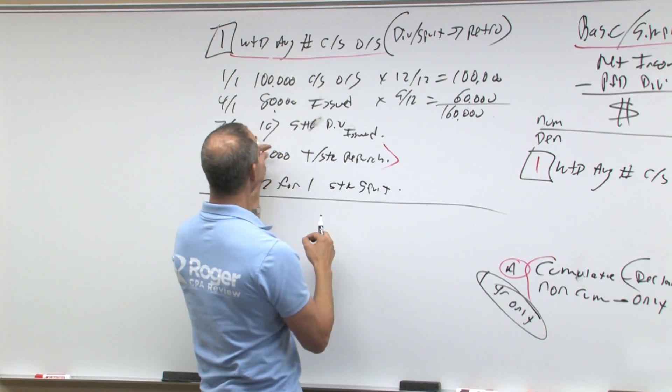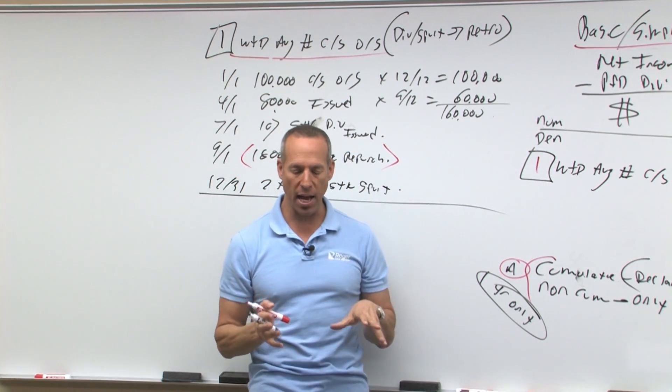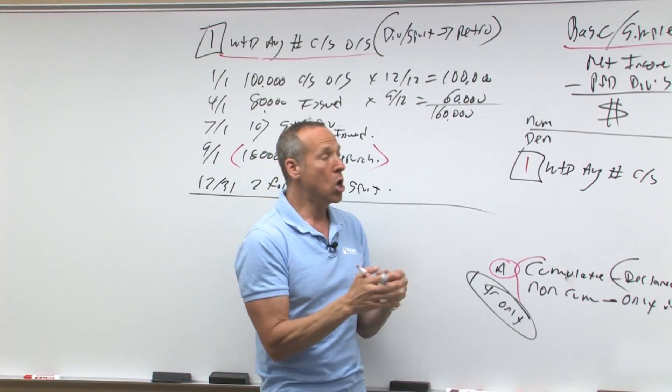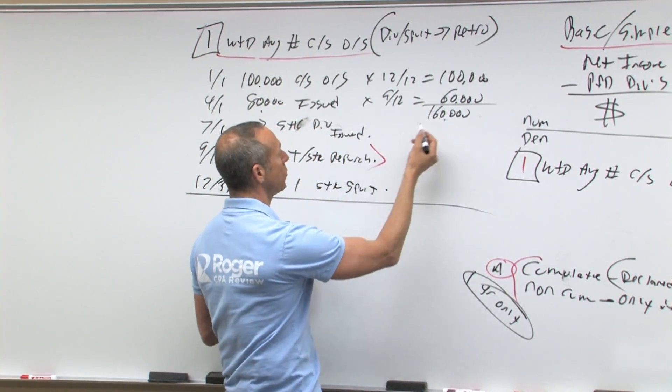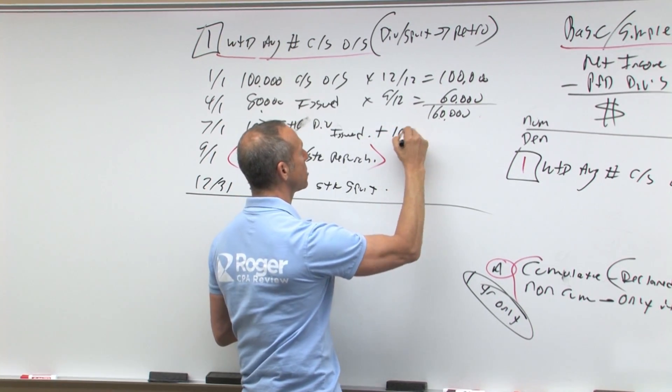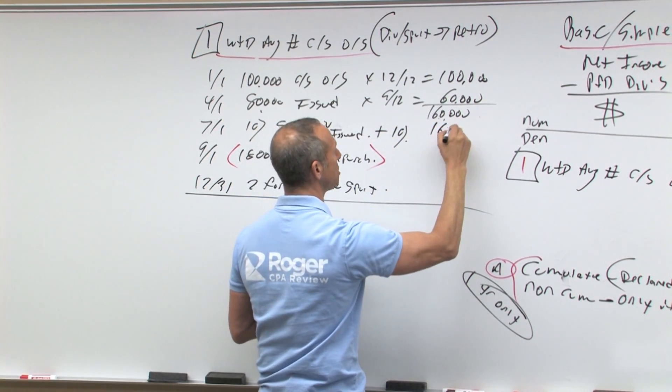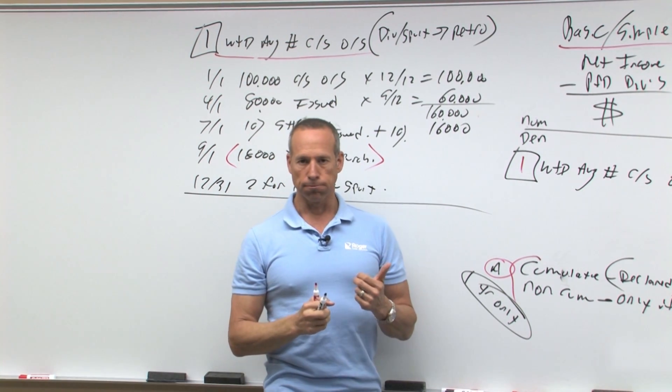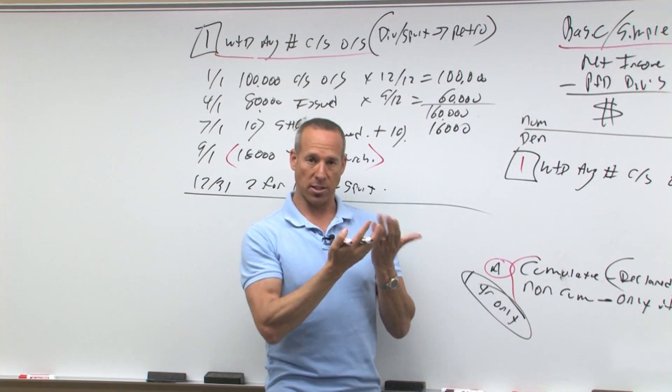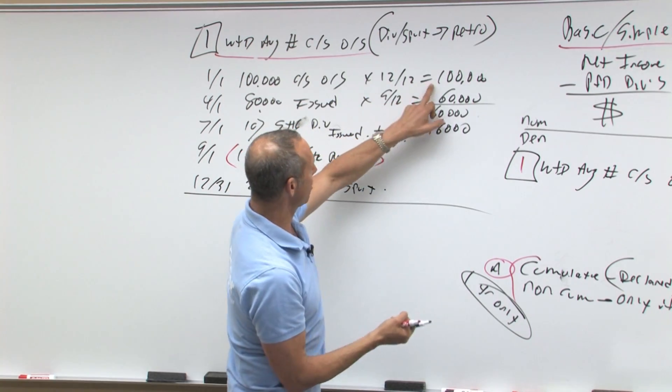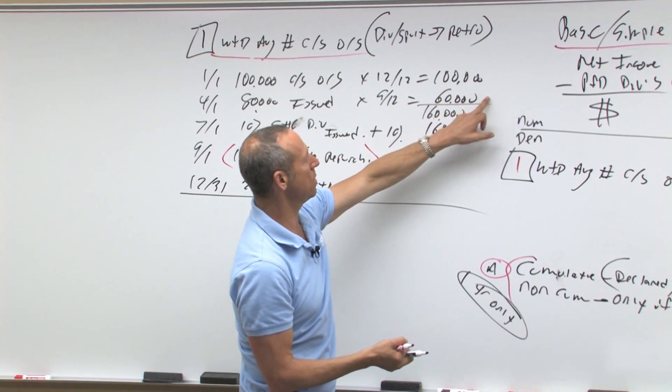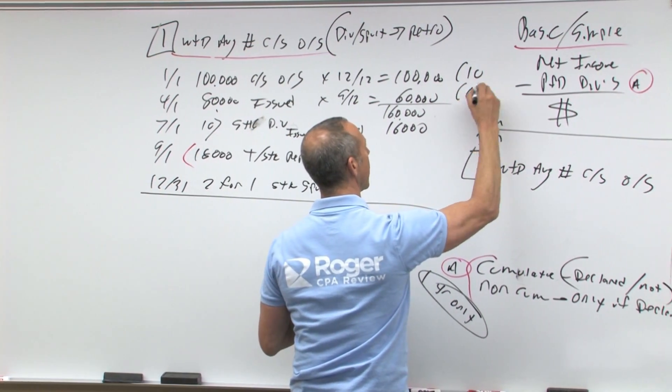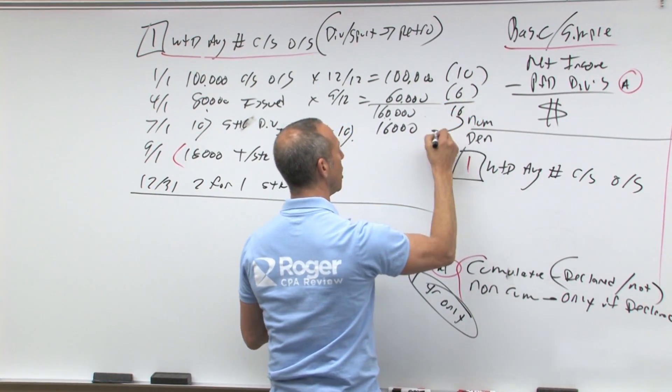Then on July 1st, 10% stock dividend - what does that mean? It means you go back and everything outstanding gets 10% more. So in a sense, what you can do is you can add the 10% retroactive, which is another 16,000 shares. As if it went all the way back. So you can either take this, 100 plus 10% is 110, 60 plus 10% is 6, there's your 16.